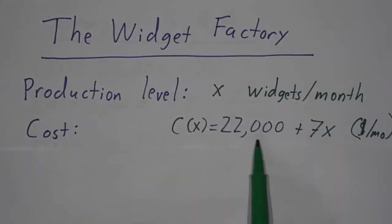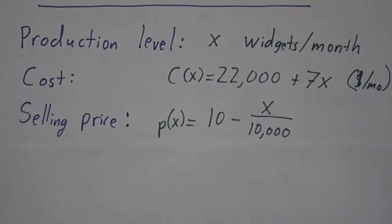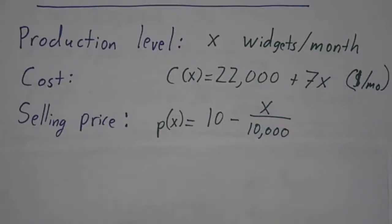In other words, it costs $22,000 just to keep the lights on, and then every additional widget that it makes costs $7. And the price it can sell the widgets for is 10 minus X over 10,000. So if it makes 10,000 widgets, it can sell them for $9. If it makes 20,000 widgets, it can sell them for $8, and so on.